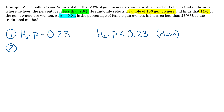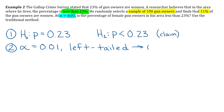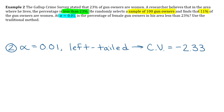Step two: get our critical value. Alpha is 0.01. This is a left-tailed test because the sign in the alternative hypothesis is a less-than sign. So the critical value is negative 2.33.